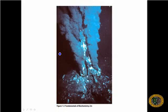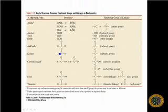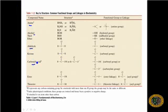The other idea is that life arose from hydrothermal vents at the ocean floor. The key elements in biochemistry include a number of these: amines, alcohols, aldehydes, and carboxylic acids, to name just a few.